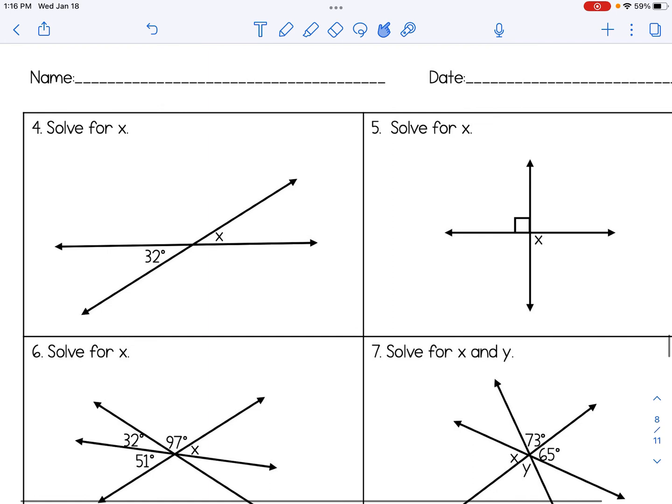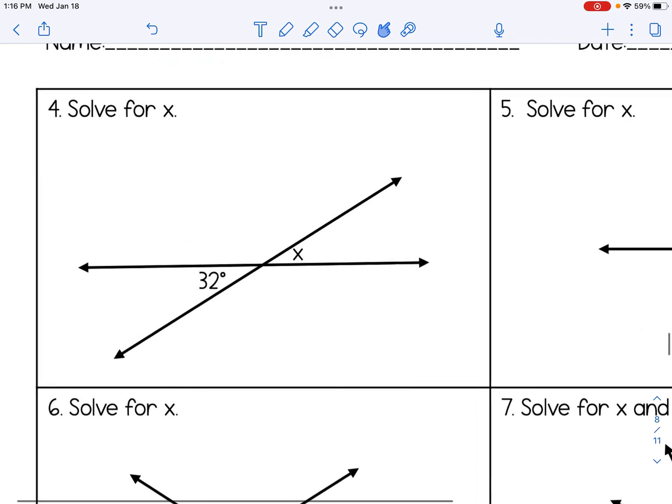Let's take a look at some more examples. In number four, we're given the angle of 32 degrees. X is across from it, formed by the intersecting lines, therefore X is also 32.